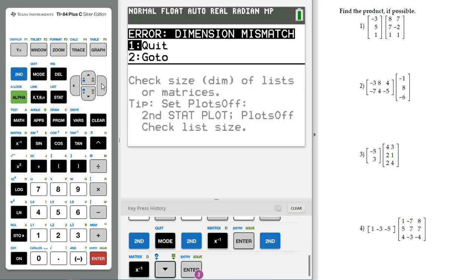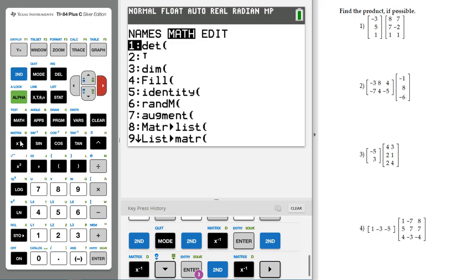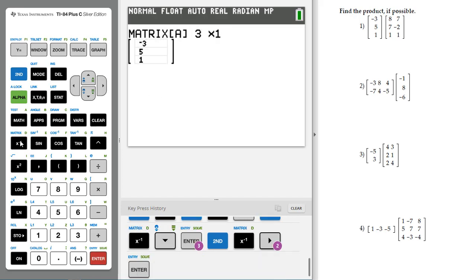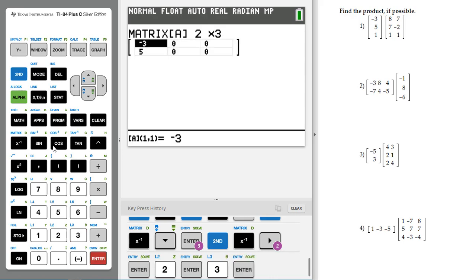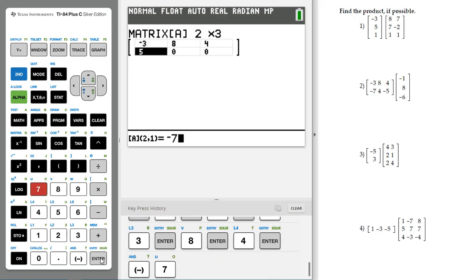So I'm going to quit this error. Let's go ahead and redefine our A and our B. So I'm going to say 2nd Matrix A, let's go to edit it. We're going to edit to be 2 rows and 3 columns. And then the numbers we want to put in is negative 3, enter, 8, 4, negative 7, 4, and negative 5. And so we've put that information in and you can second quit.